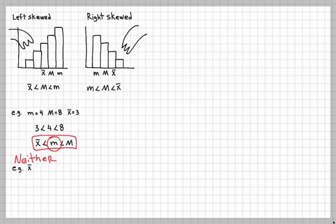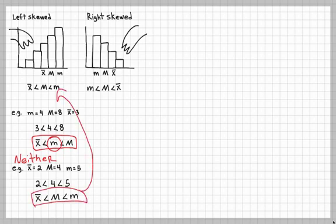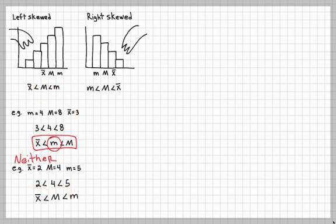Next example: the mean is 2, the median is 4, and the mode is 5. Put them in order: 2 < 4 < 5. The 2 is the mean, 4 is the median, and 5 is the mode. The median is in the middle — that's the main requirement. This matches the pattern mean < median < mode, so this is left skewed.